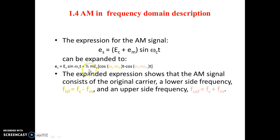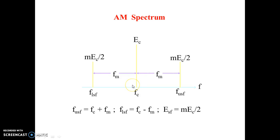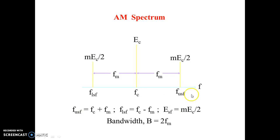When we perform AM modulation, the frequency spectrum shifts to two new frequencies: one is the sum of the two frequencies and the other is their difference. In the spectrum, the carrier frequency is centered, with the lower sideband and upper sideband on either side — both having the same amplitude and information but at different frequencies. The bandwidth of the signal is the difference between the upper and lower sidebands. Since the same information exists at both USB and LSB, at the receiver it is sufficient to demodulate only one of them.